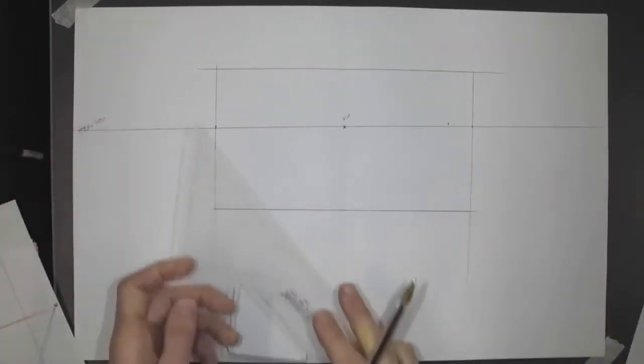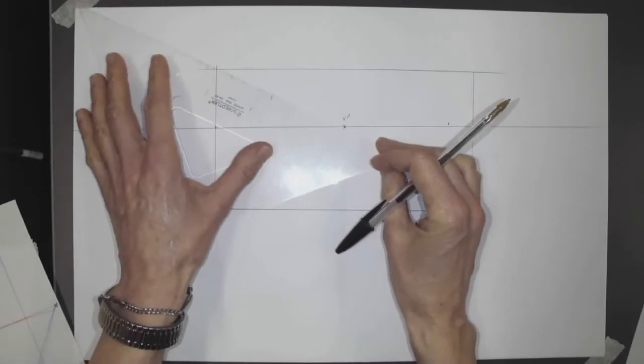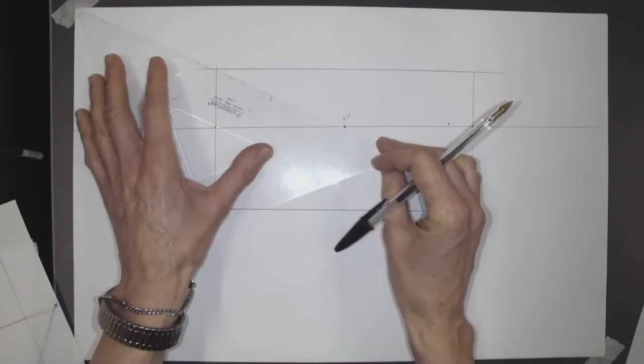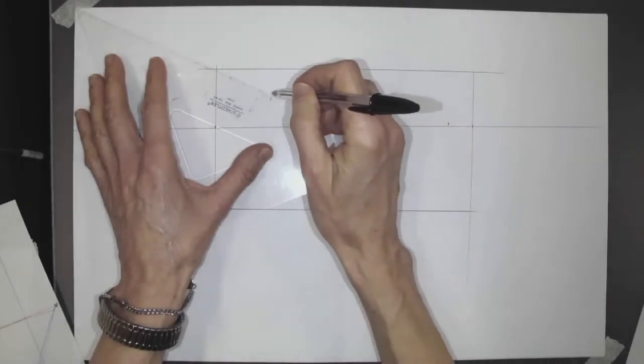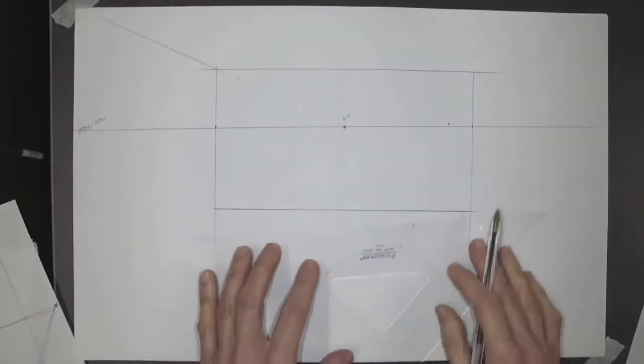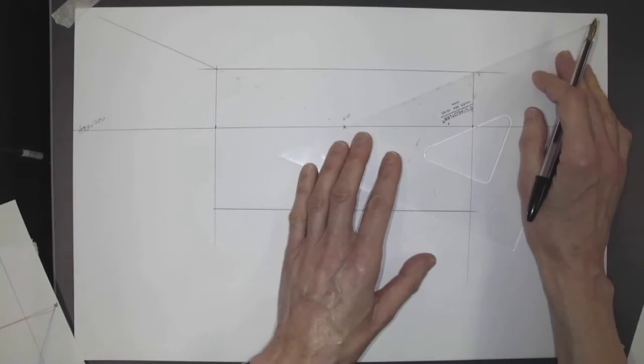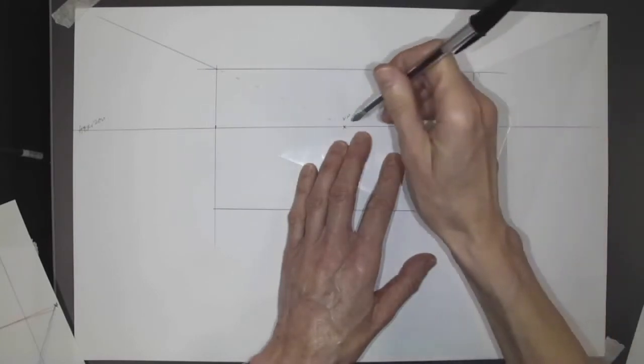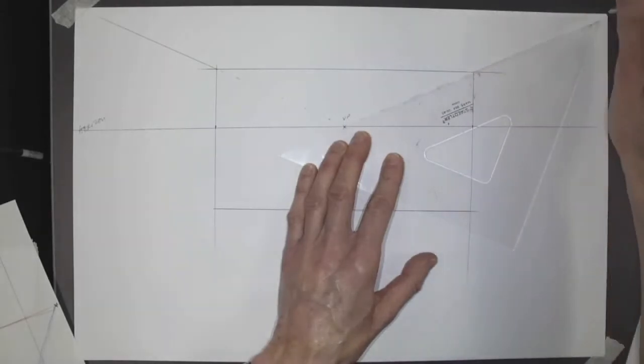And to make my ceiling, now this isn't going to touch in the corner necessarily. Yours might, but it's not something we're aiming for. It's just a happenstance. You can't be sure where it's going to end up unless you plan it ahead of time. So don't worry where this ends up. Just follow your vanishing point through the corner at the top, and that will give you the ceiling.